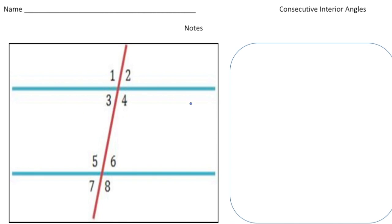We have two lines that are parallel, the blue lines, and then we have a red transversal line that cuts through the two parallel lines. So what I want you to do is focus on the inside of the parallel lines. Those are the interior angles.